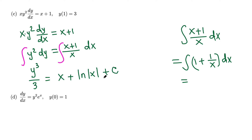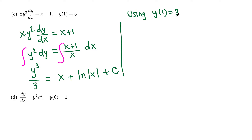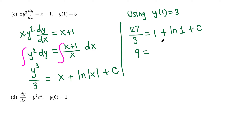Adding plus c, we now use the initial condition y(1) equals 3. Plugging in y equals 3 and x equals 1: 3 cubed over 3 equals 27 over 3 equals 9. On the right, 1 plus natural log of 1 plus c equals 1 plus 0 plus c. So 9 equals 1 plus c, subtract 1, giving c equals 8.